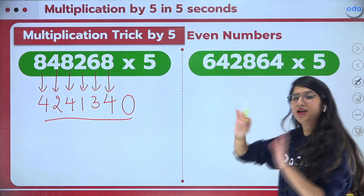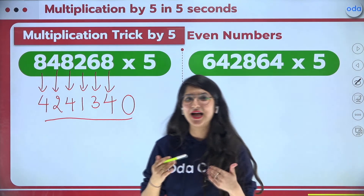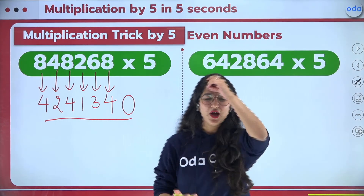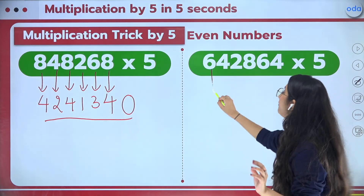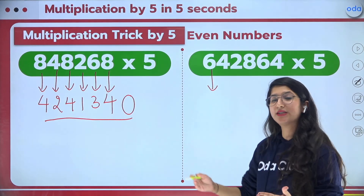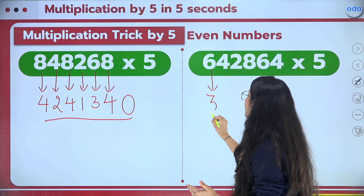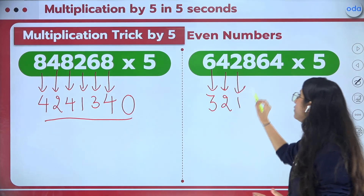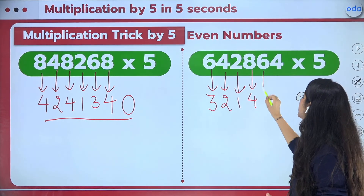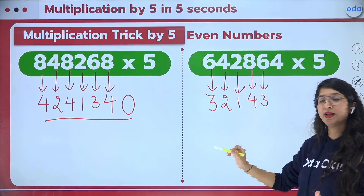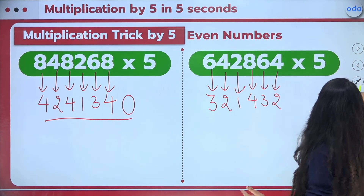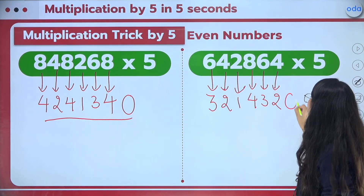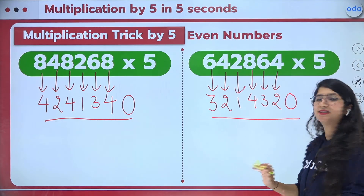Let's try one more question — let's see who does it first, you or me. Check where these digits come in the 2 times table: 6 at the 3rd place, 4 at the 2nd, 2 at the 1st, 8 at the 4th, 6 at the 3rd, and 4 at the 2nd. Step 2: just put 0 at the end, and your answer is done.